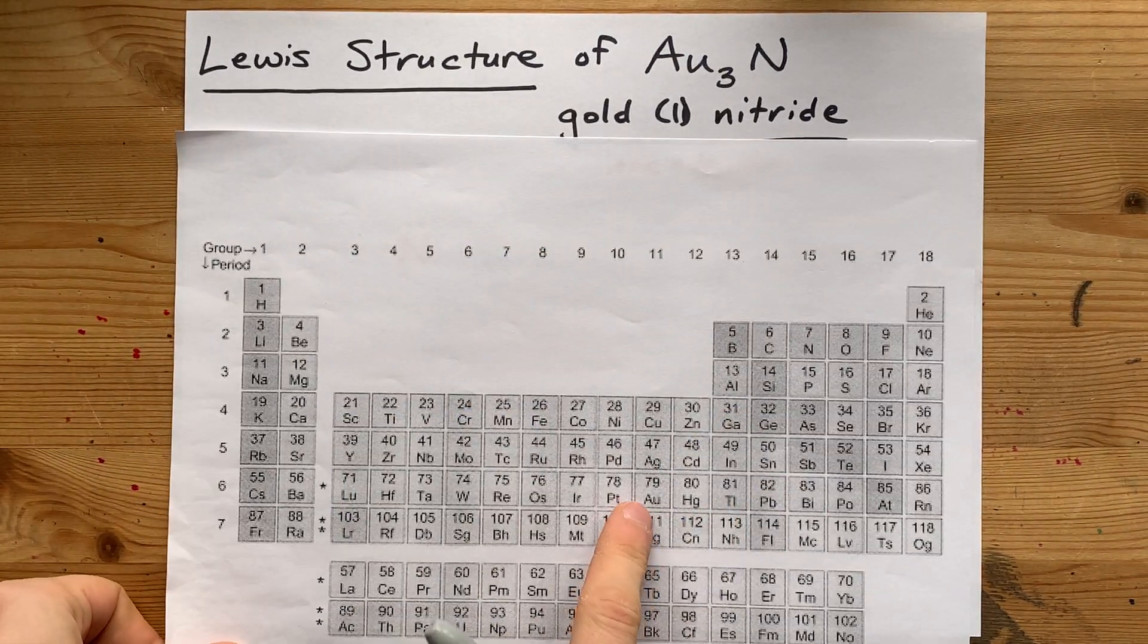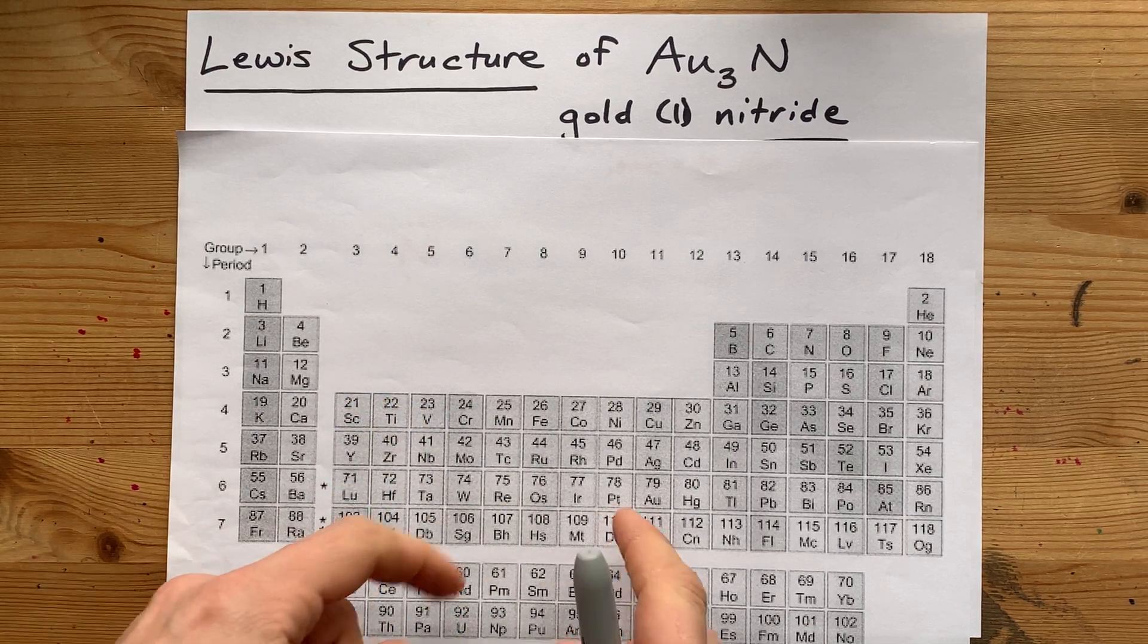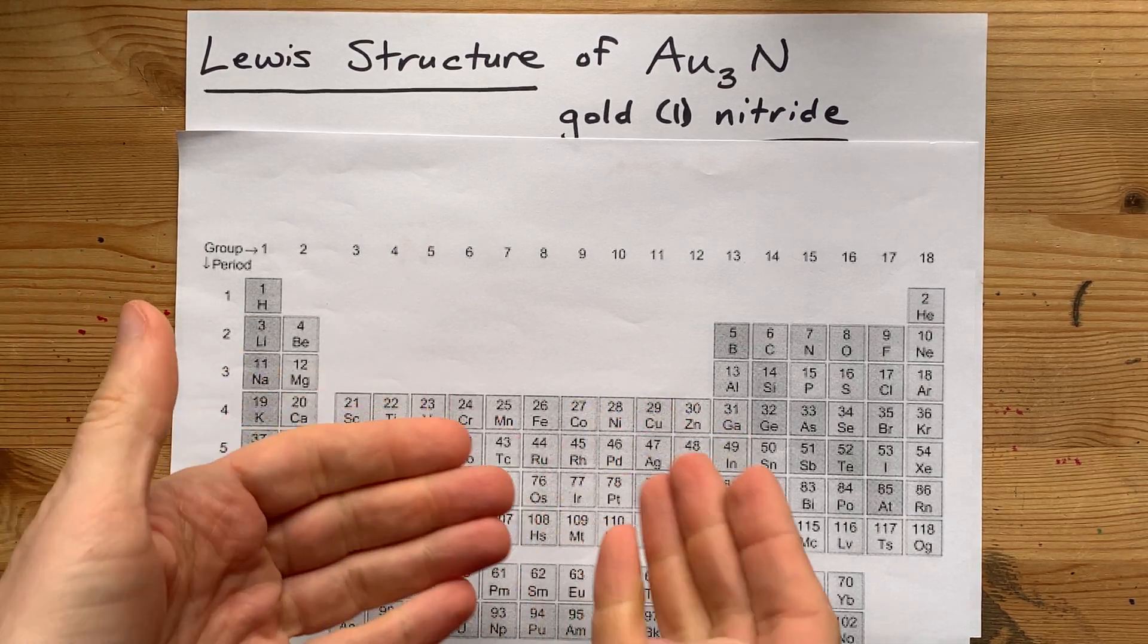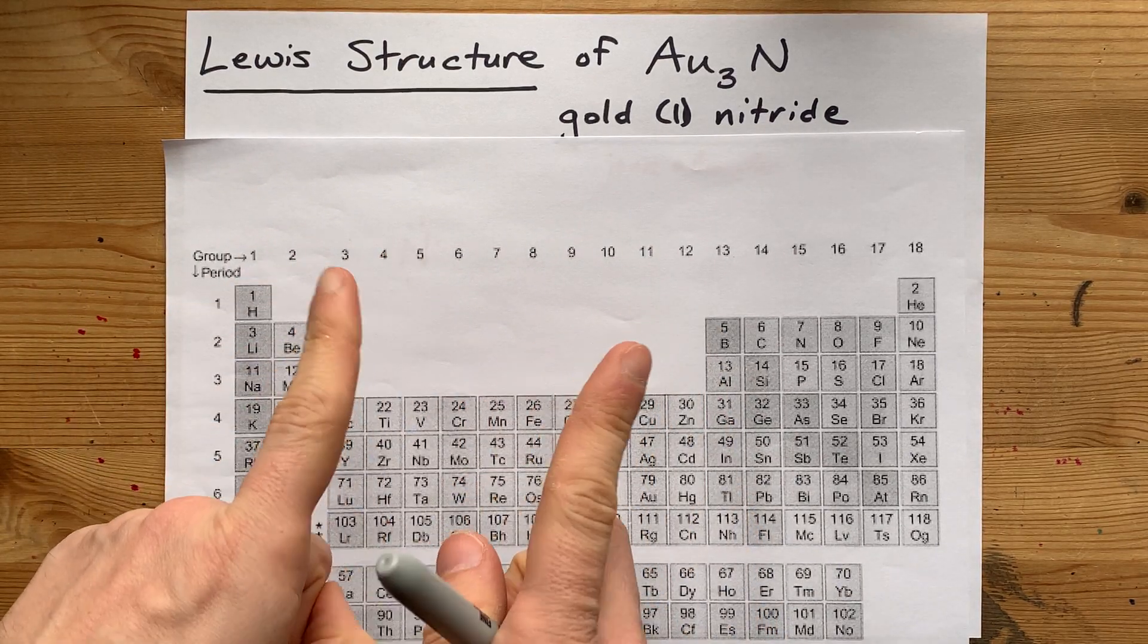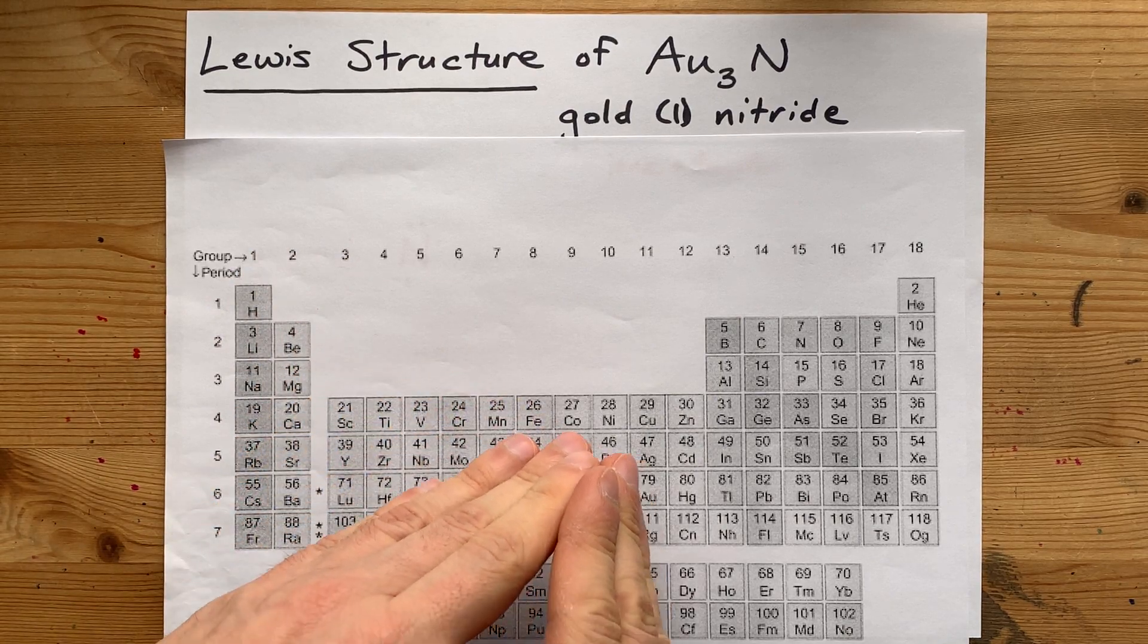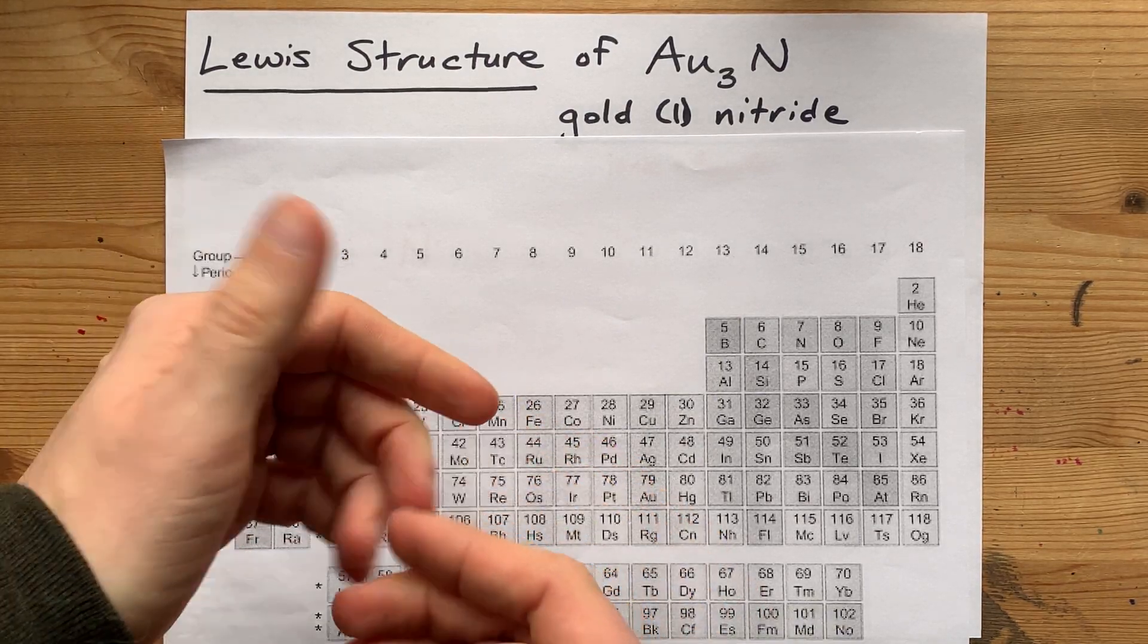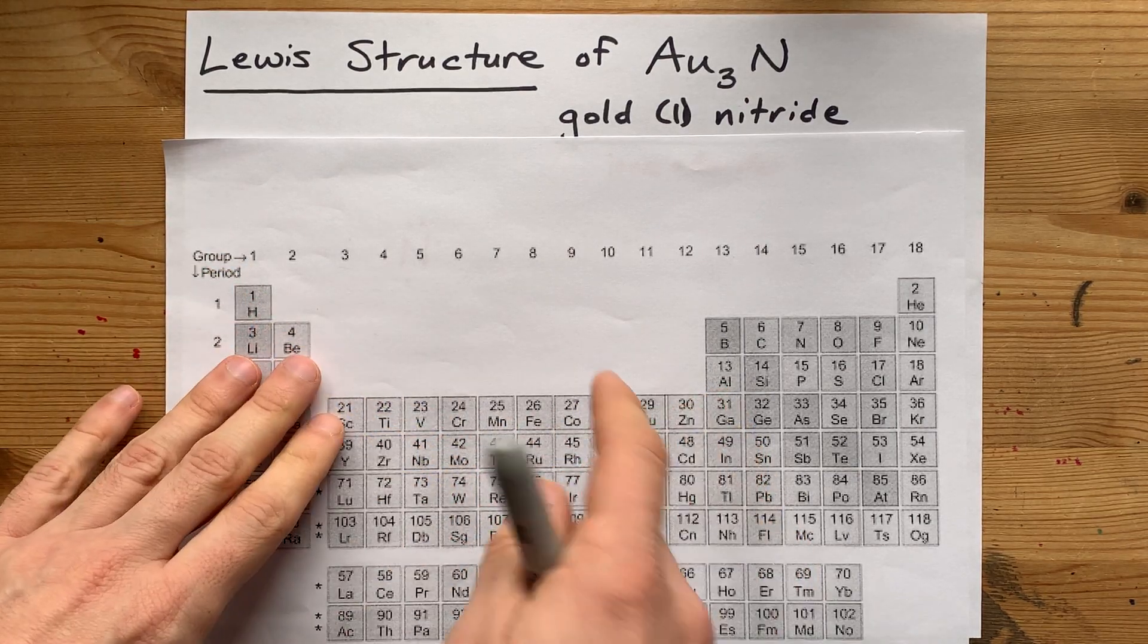Gold, on the other hand, is trickier. Gold is in the transition metal block, and most of these atoms can have more than one possible charge. The trick is, when you're drawing the Lewis structure,